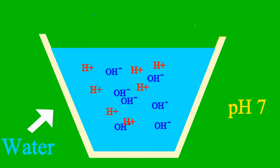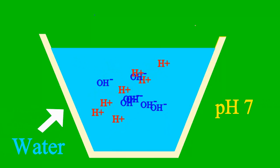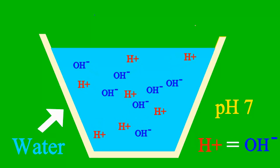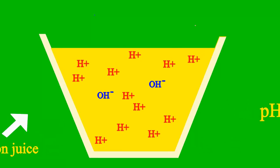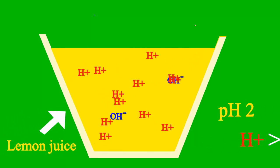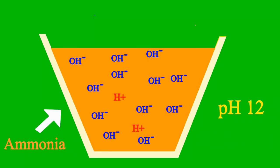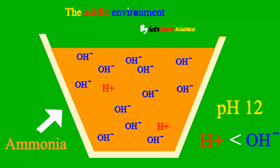When the pH is 7, it's a case where the sample is neither an acid nor a base. But less than 7 it's an acid, and more than 7 it's a base all the way.